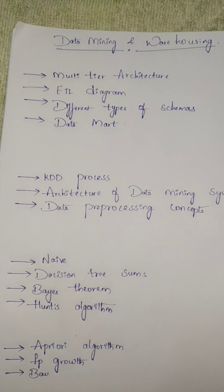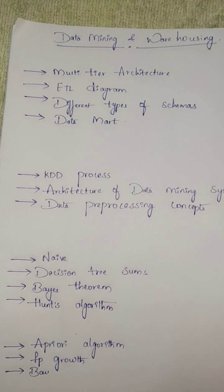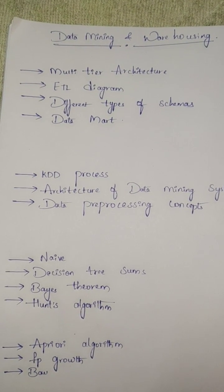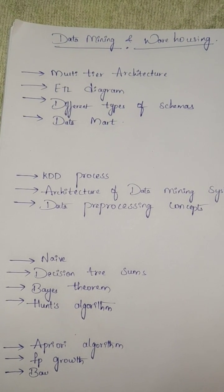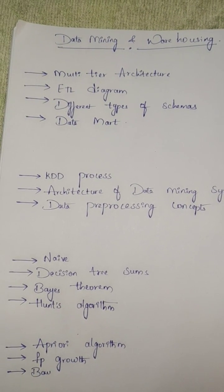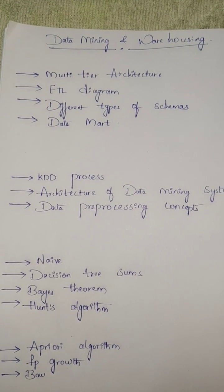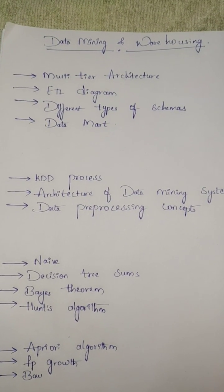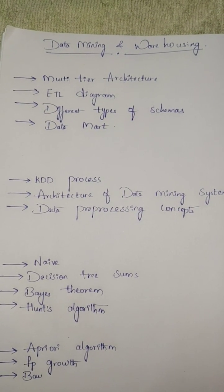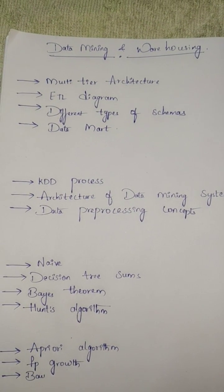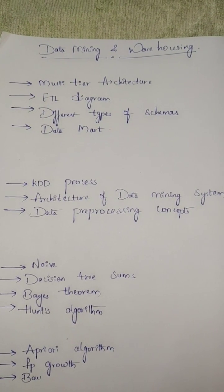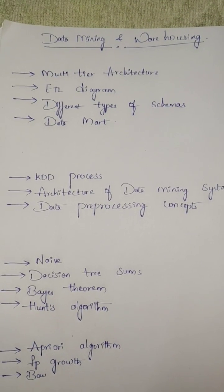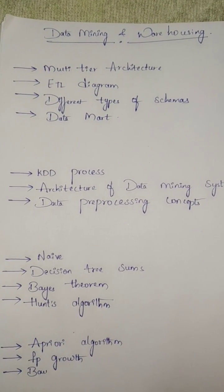First, multi-tier architecture. Multi-tier architecture is also available for 3-tier architecture. Next, ETL process. Different types of schema: Snowflake Schema, Star Schema, Alanti Schema, Data Mart.